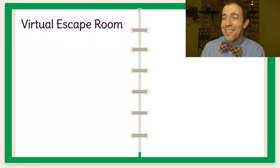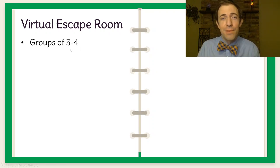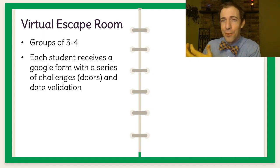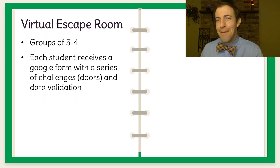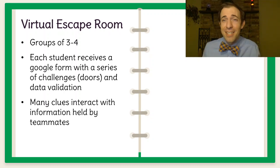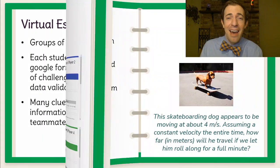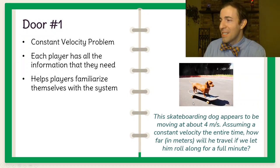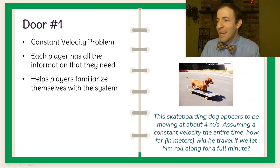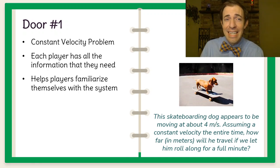Another more elaborate task that I used to create a similar sort of response was an escape room that happened virtually. I made groups of three or four where every student received a Google form with a series of challenges that I called doors and data validations so they had to submit the correct answer before moving on in their Google form. What made this group worthy is that the clues interacted with each other so they all had their own individual Google form but their clues required information that somebody else had. So for example door one started out very simple that it was just a constant velocity problem where they had to solve something like how far this wiener dog went over a given amount of time they had all the information that they needed.